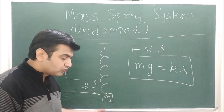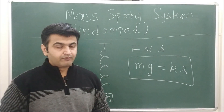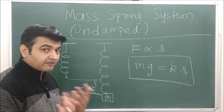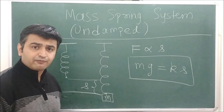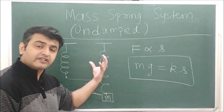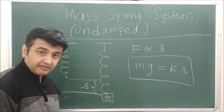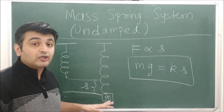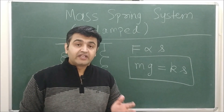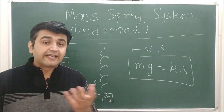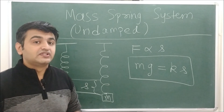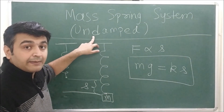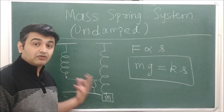A dashpot reduces oscillations — it causes the system to slow down and ultimately stop. Here I am assuming there is no air friction and no dashpot, so the oscillations will keep happening and never stop. Such a system is called an undamped system, because there is no damping. Dashpots, air friction, and similar effects act as damping. This is the undamped mass-spring system.